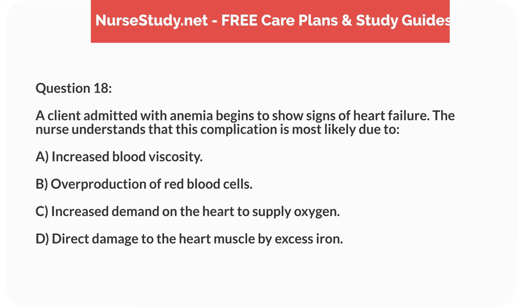Question 18. A client admitted with anemia begins to show signs of heart failure. The nurse understands that this complication is most likely due to: A. Increased blood viscosity. B. Overproduction of red blood cells. C. Increased demand on the heart to supply oxygen. D. Direct damage to the heart muscle by excess iron.